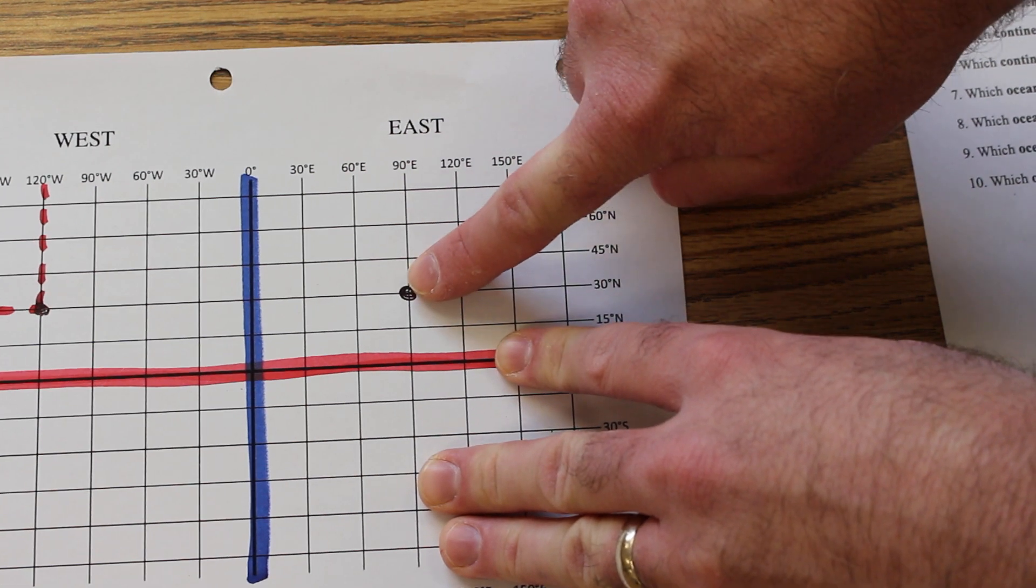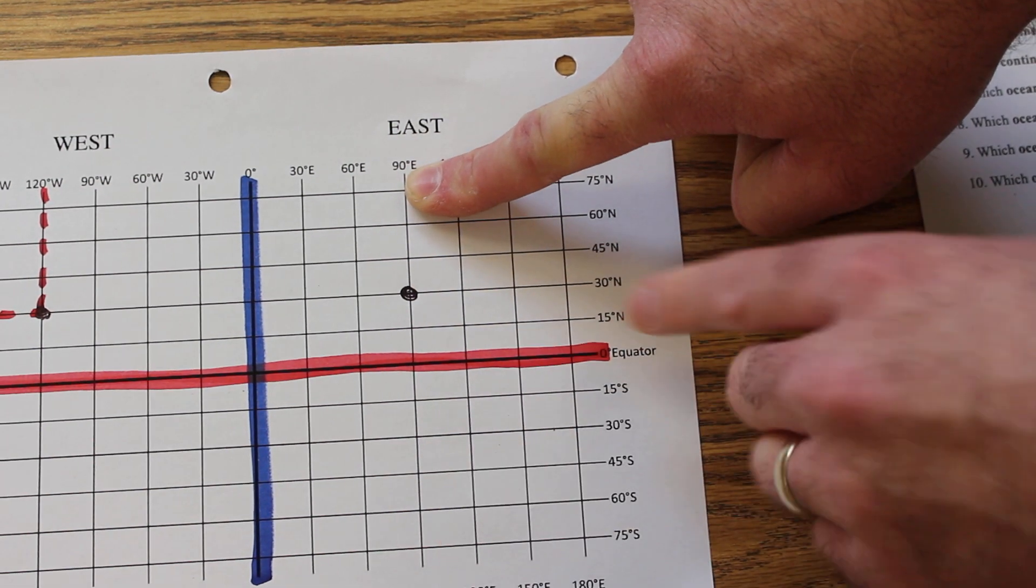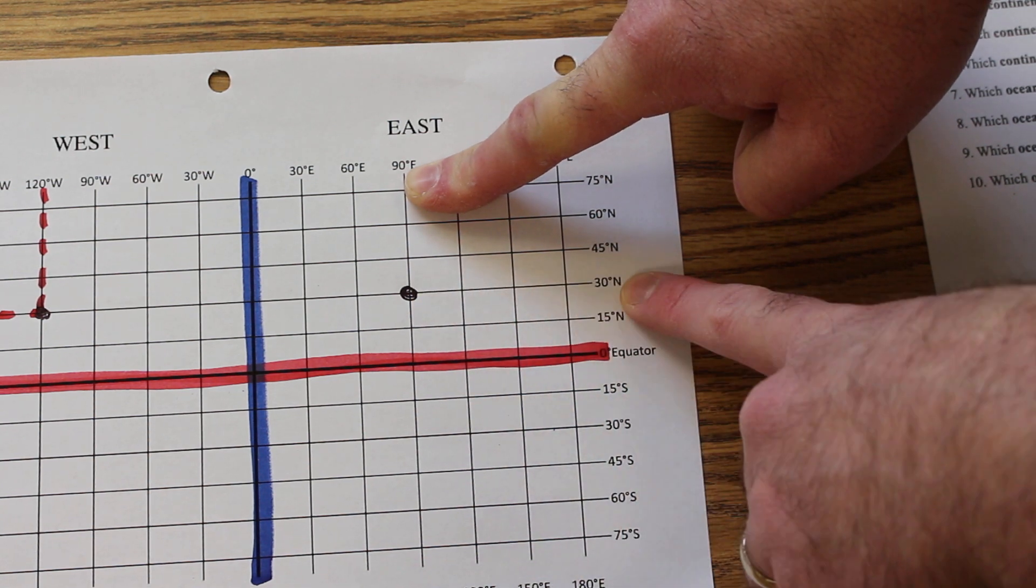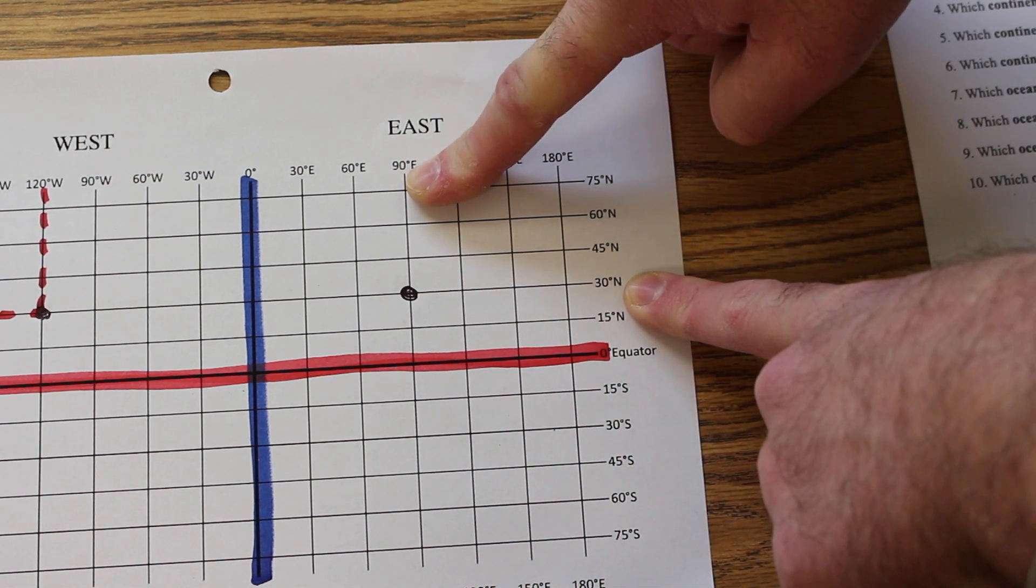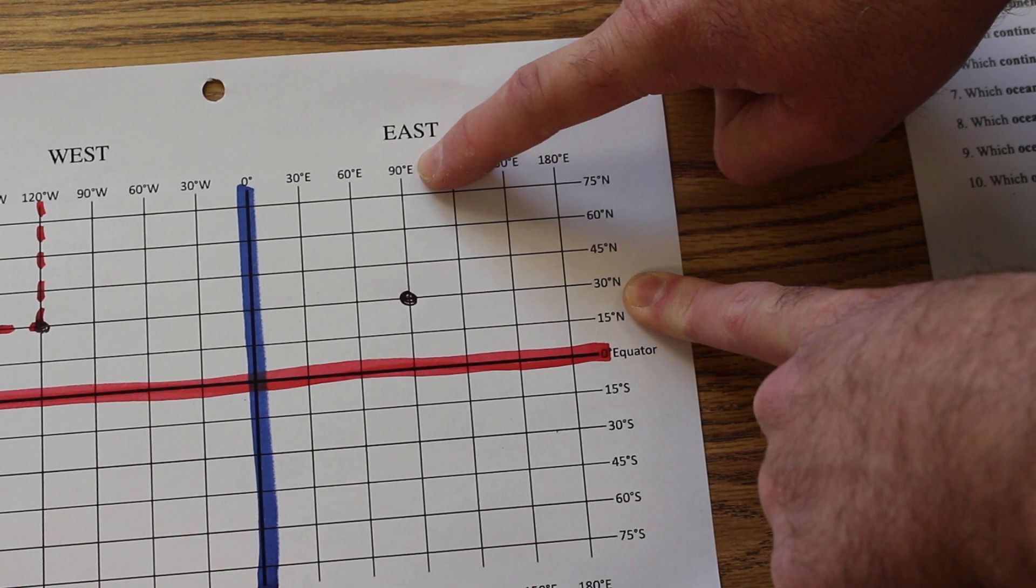Trace the longitude line to see what longitude it's at, 90 degrees east. Trace the latitude line. It's at 30 degrees north. So this point is at 30 degrees north, 90 degrees east.